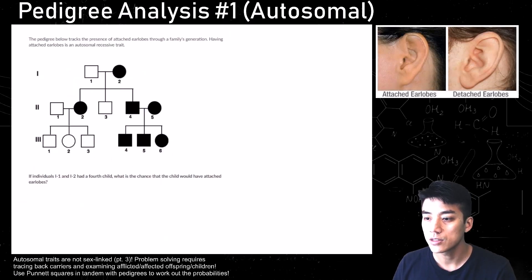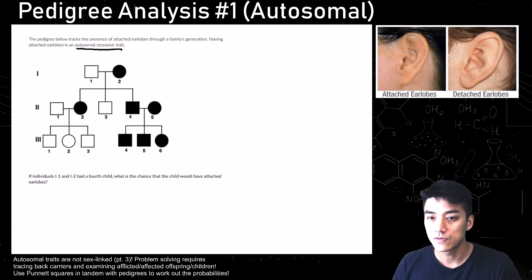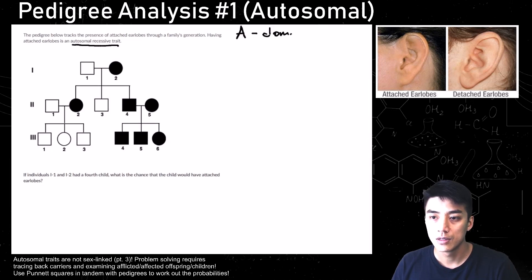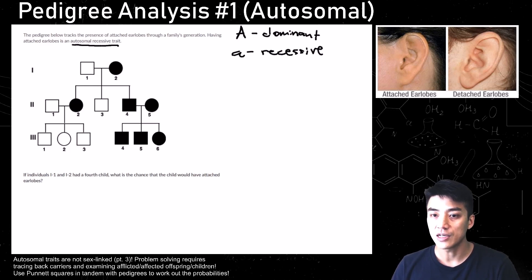In this pedigree analysis we're going to study attached versus detached earlobes, and there's a picture above me — it's pretty self-explanatory. It's an autosomal recessive trait, so I'm going to pick a letter: big A is the dominant allele for detached earlobes, and if you have two copies of little a — two copies of the recessive allele — that means you have attached earlobes.